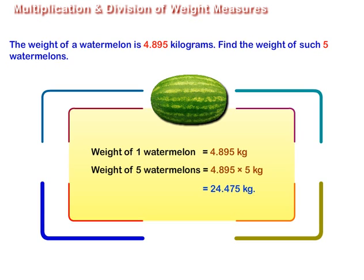Here, the weight of 1 watermelon is 4.895 kilograms. Therefore, weight of 5 watermelons is equal to 4.895 multiplied by 5 which is equal to 24.475 kilograms.